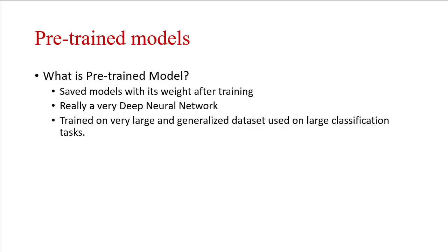Pre-trained models are saved models with their weights after training. Generally, these types of models are deep neural networks, meaning they have more than two hidden layers.